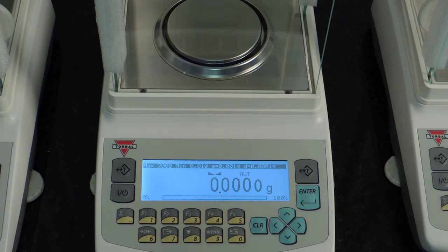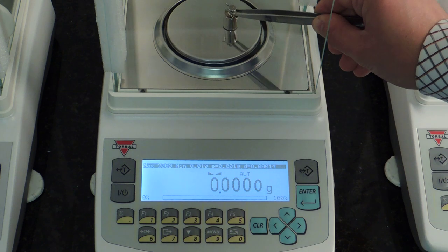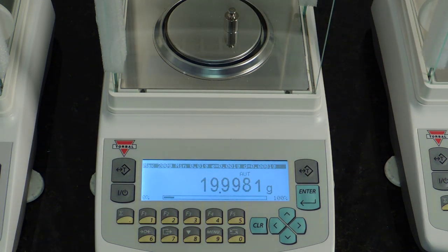In this video we will review the Torbell AGN analytical balance. The AGN is one of Torbell's most popular scales. It is also one of our best equipped models.